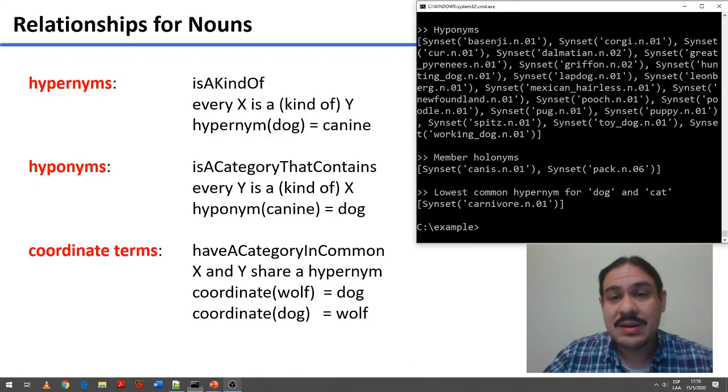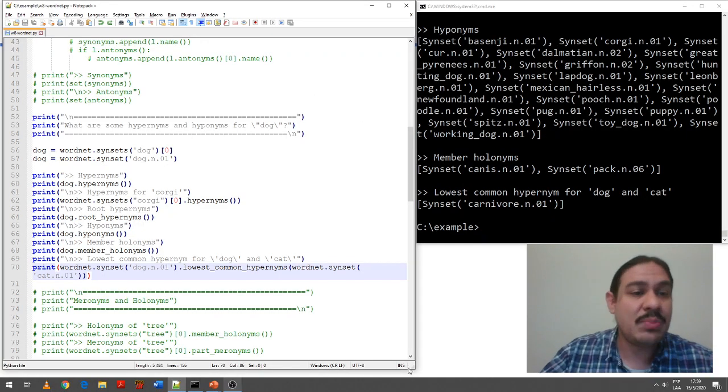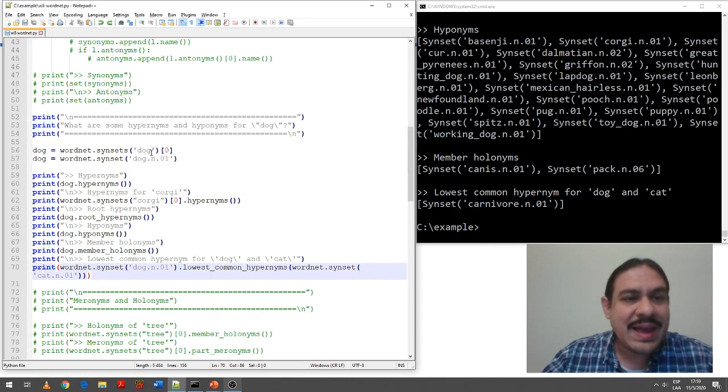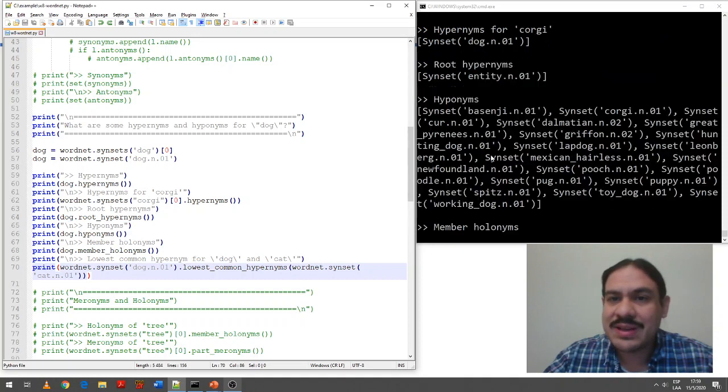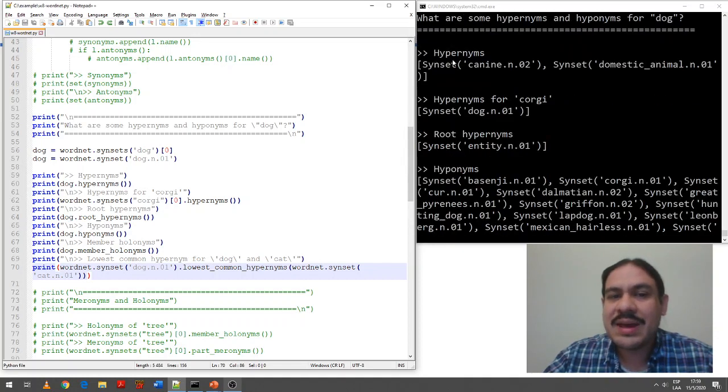Very briefly, by the way, I'm going to show you in our example code. And we had here the synsets for dog, which we looked at in the last video. And we had examples for these concepts. So, for example, a dog is a kind of canine, and it's a kind of domestic animal. A corgi is a kind of dog.